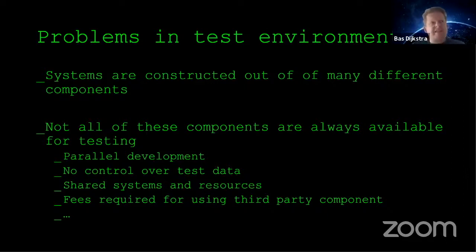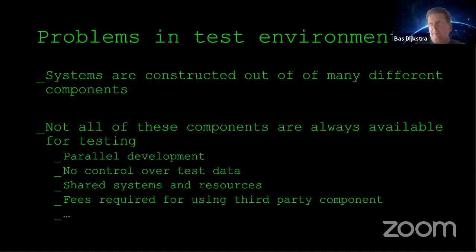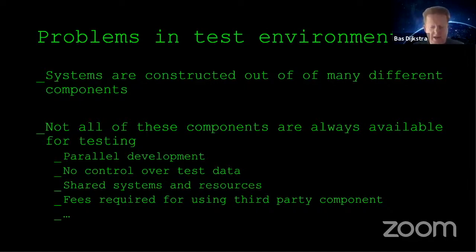In these distributed test environments, getting all of the components in the right state at the right time on demand is pretty hard. Development cycles are so much shorter these days - what used to be months then became weeks, and now it's days and in some cases even hours. Because components are developed in parallel, maybe you want to test your component against another component but the functionality you need to test against is not yet available because the other team is working hard but hasn't finished their development yet. Maybe you're working with a dependency where it's really hard to configure the right test data.